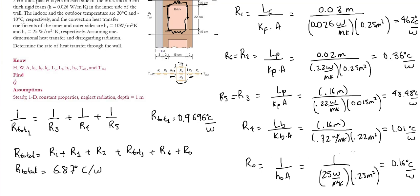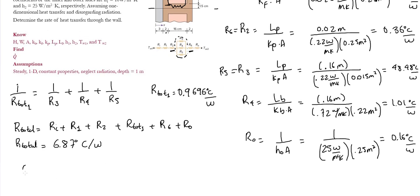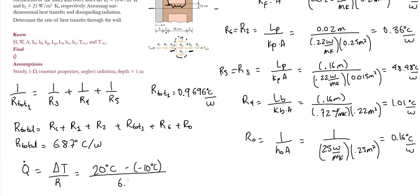We can now find the heat transfer rate for the section. Q equals delta T divided by R_total. The temperature difference is 20°C minus negative 10°C, giving 30°C. Dividing by the total resistance of 6.87°C/W, we get Q equal to 4.37 watts.